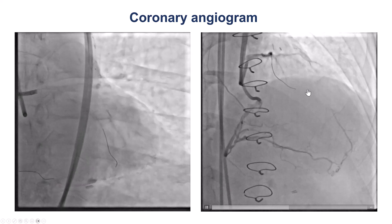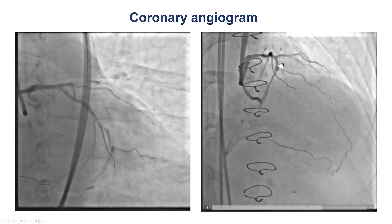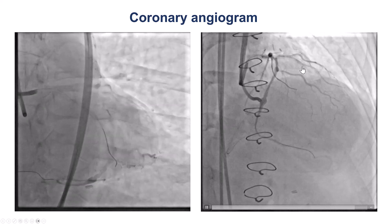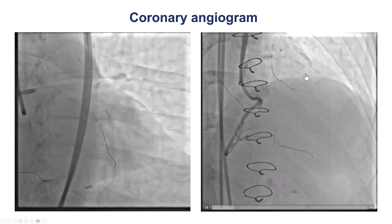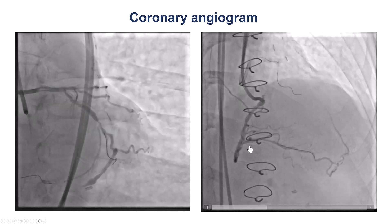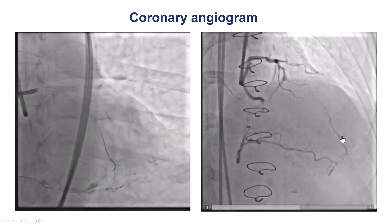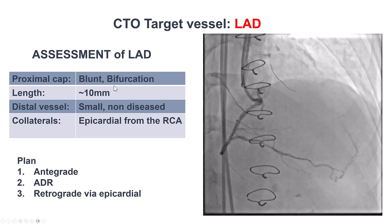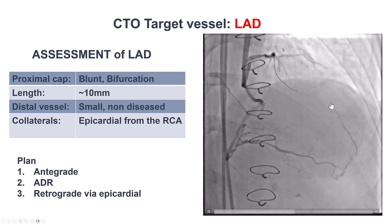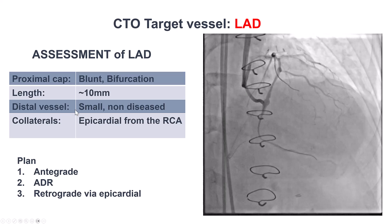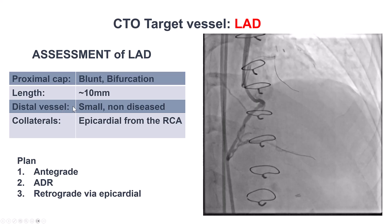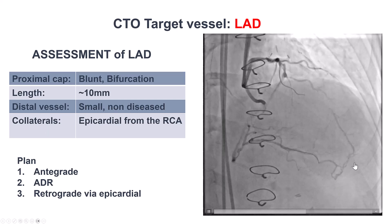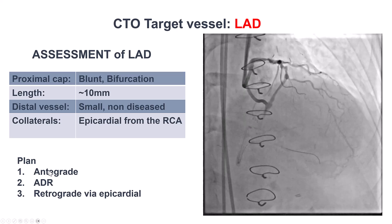This is his coronary angiogram showing the LAD CTO. There is a diagonal branch with a proximal cap at the takeoff of the diagonal branch. The distal vessel is filling through this complex epicardial collateral. To summarize, it's a blunt but clear cap. The length of the CTO was fairly short, about 10 millimeters, based on the CT. The distal vessel was small, and there was this complex epicardial collateral from the right coronary artery.